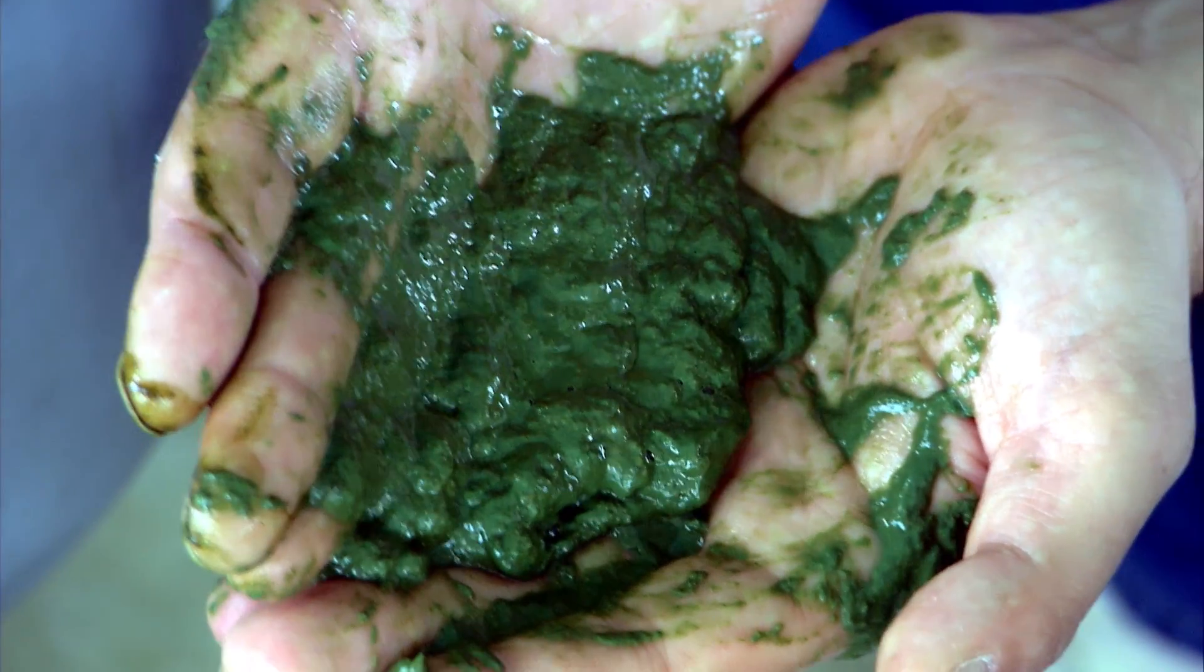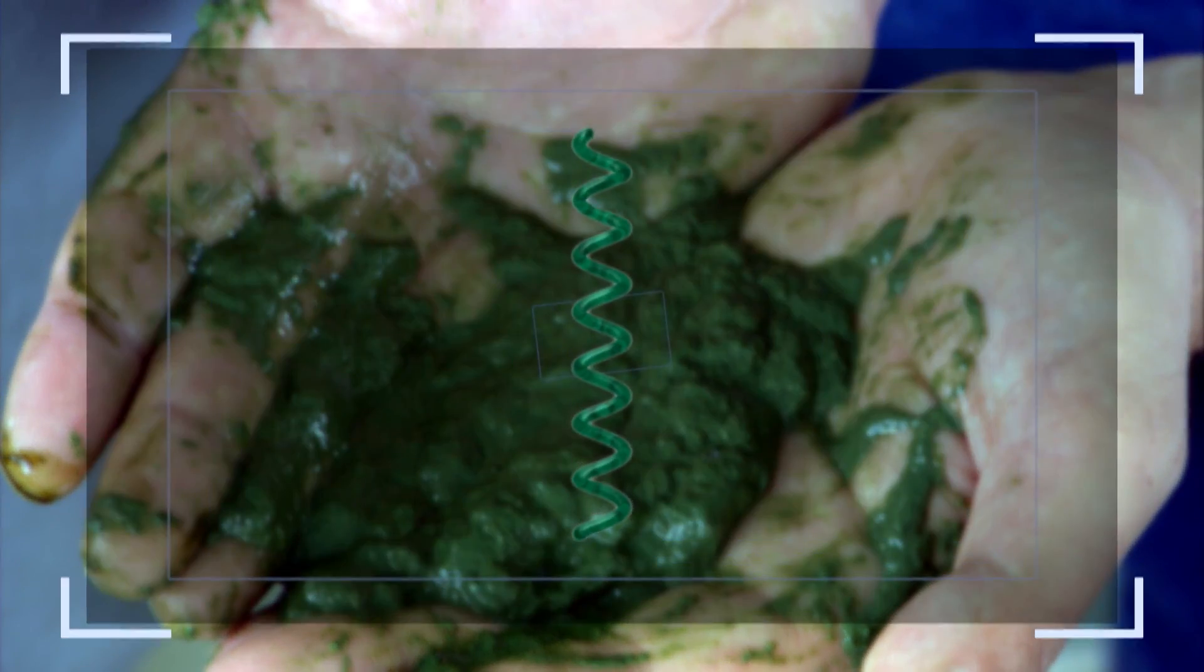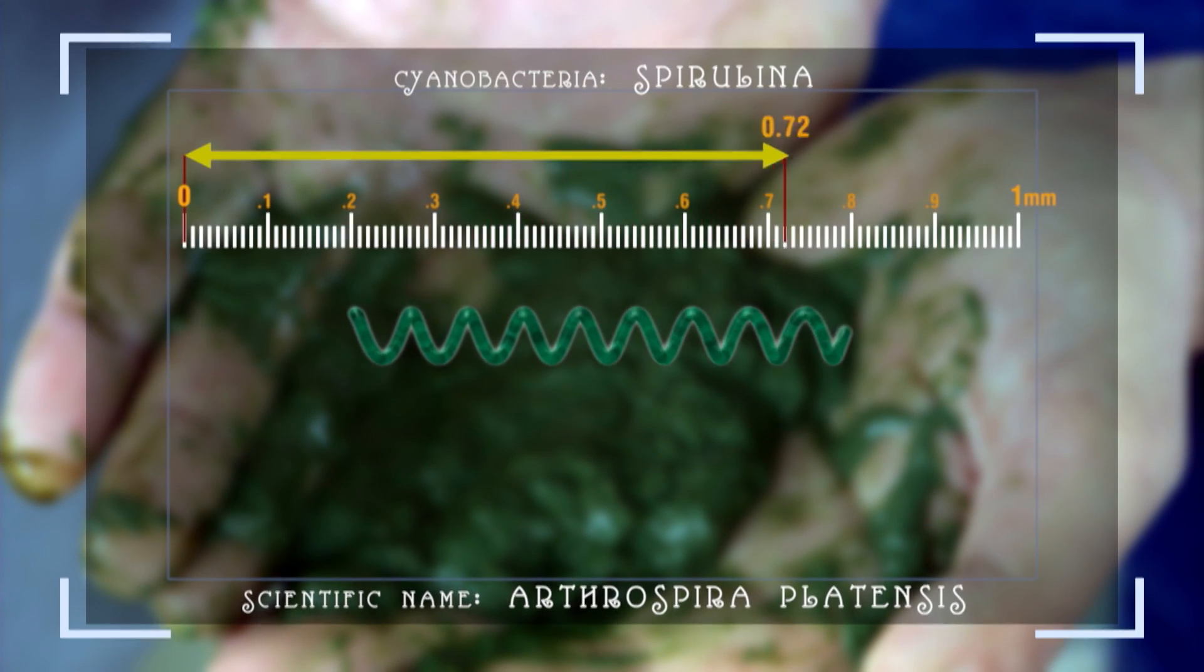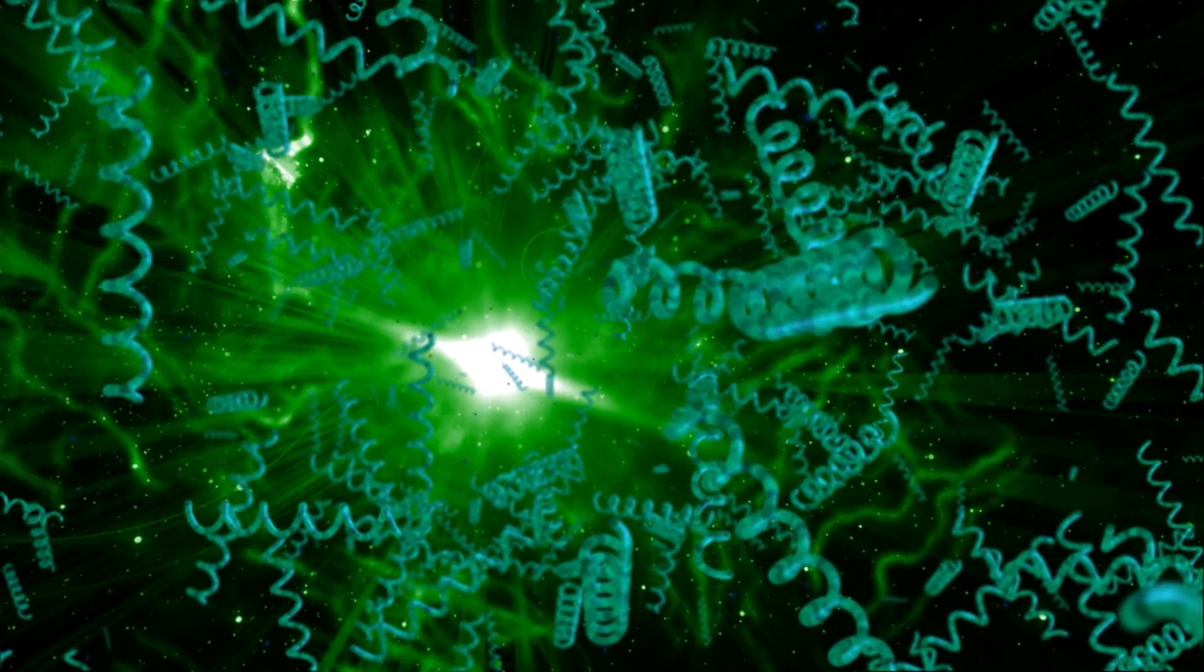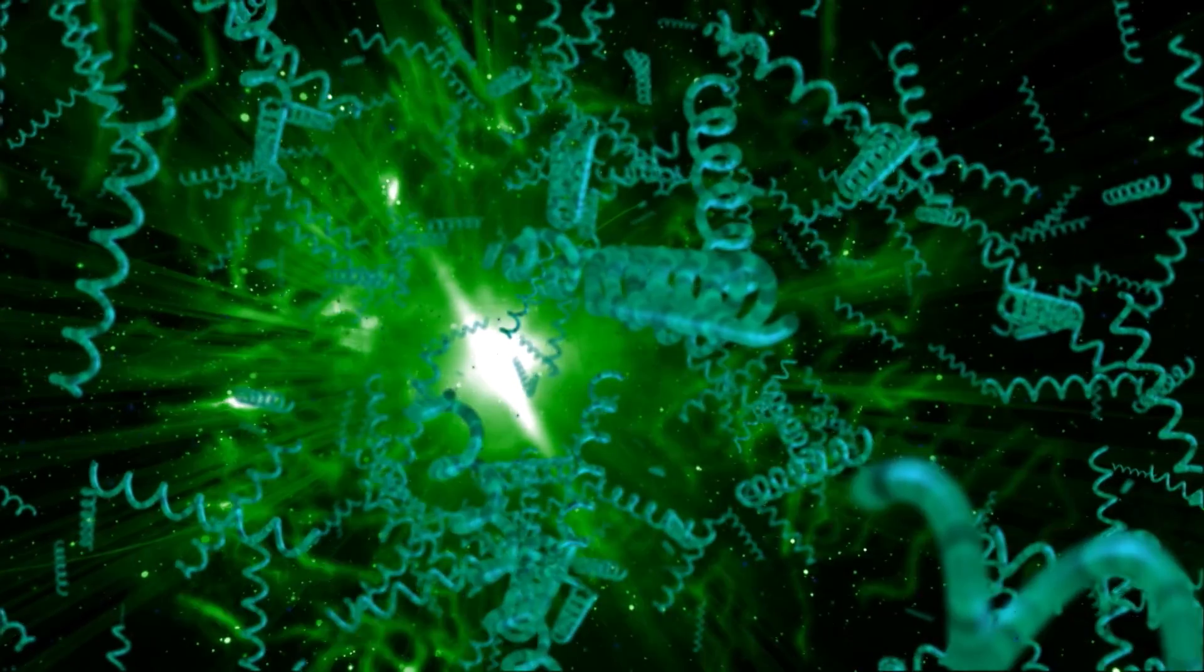But what exactly is the blue-green alga called spirulina? It is a simple, one-celled form of alga, reaching sizes of 0.3 to 1 mm in length. These cells are able to capture the energy of the sun and utilize the nutrients in their watery environment.